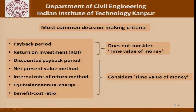Common decision making criteria include the payback period, return on investment, discounted payback, net present value, internal rate of return, equivalent annual charge, and cost-benefit ratio. The payback period and return on investment do not consider the time value of money, while discounted payback, NPV, IRR, and cost-benefit ratio do. In today's discussion we will focus on payback period, discounted payback, NPV, and IRR.